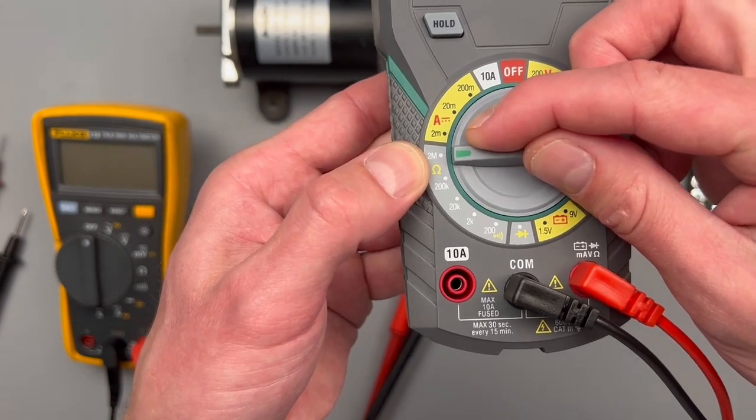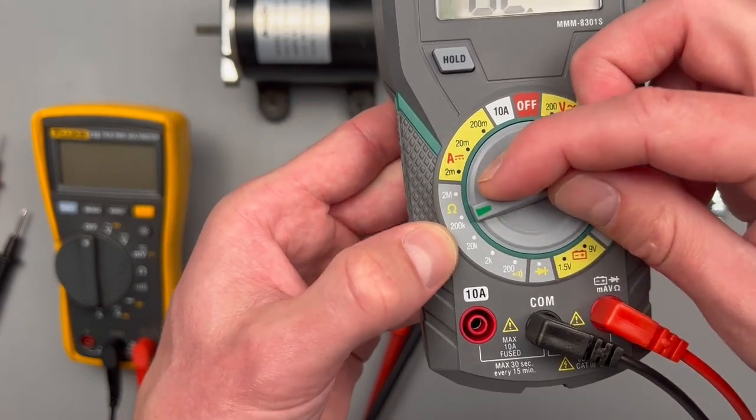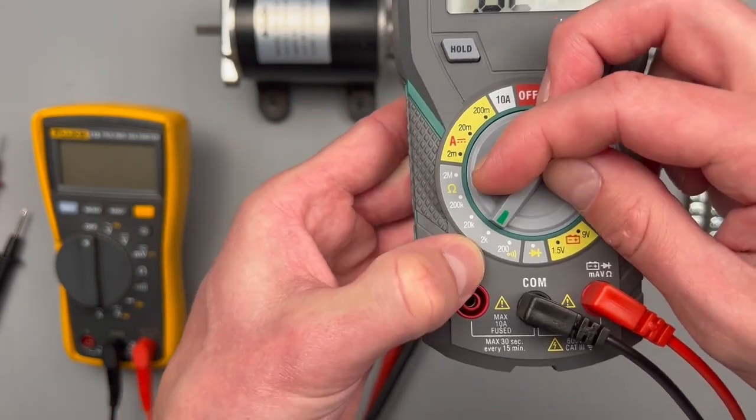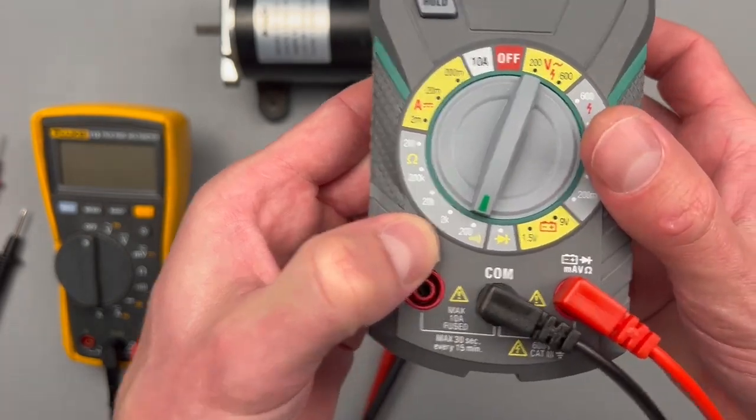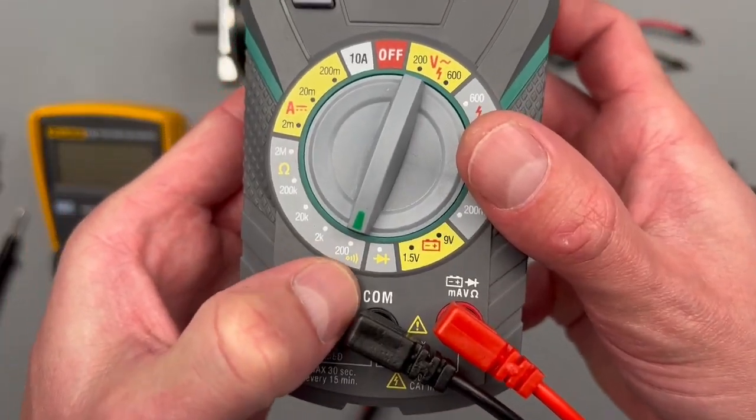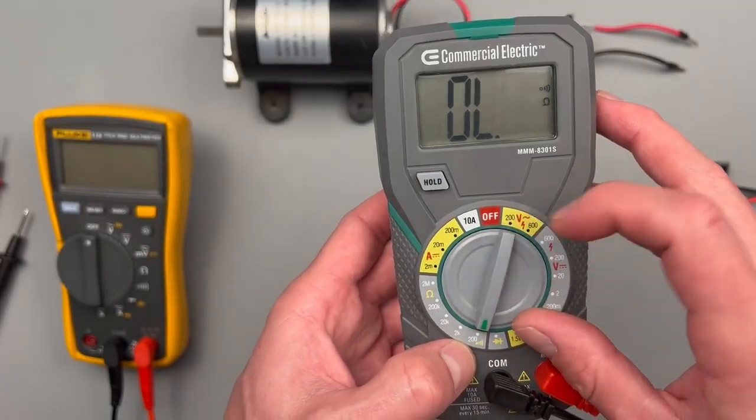There's two mega ohms, 200 kilo ohms, 20 kilo ohms, 2 kilo ohms, 200 ohms, and then lastly that little speaker symbol is going to be for continuity.